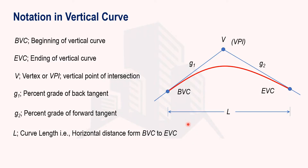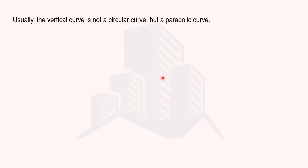Keep in mind that in a vertical curve, the length of the curve is not measured along the curve itself — the length of the curve is the horizontal distance from the beginning point to the end point. Now for the derivation of the vertical curve formula: the key thing to know is that a vertical curve is not a circular curve but a parabolic curve, so the derivation follows accordingly.